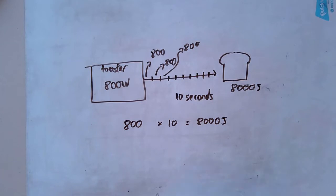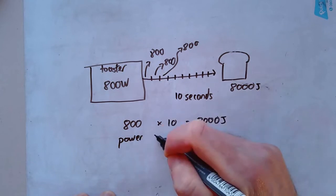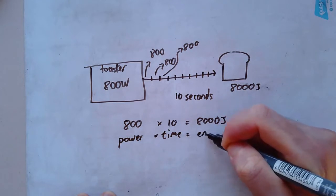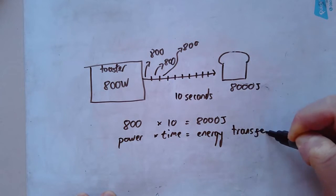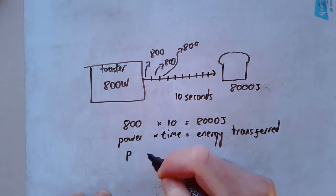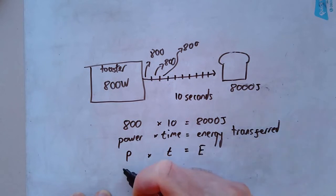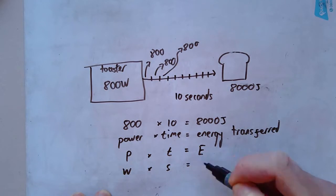Which means that what I've done is I've taken the power of my toaster. I've timesed it by the time that it's on. And that's given me the energy that has been transferred. This equation in letters is capital P times T equals E. The units are watts, seconds, and it has to be seconds. And that gives me joules.